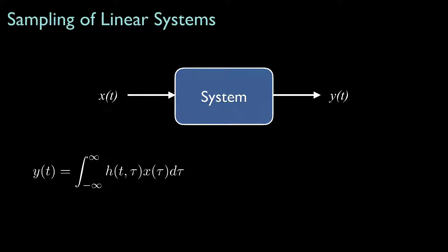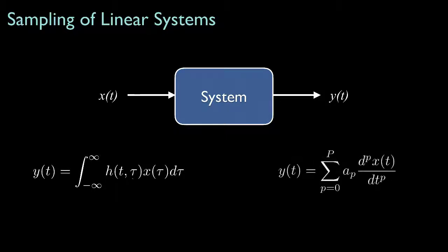One of the ways we describe the input-output relationship for a linear system is through a superposition integral with some kernel h of t and tau, which is the response of the system at some time t when the input is an impulse at some time tau. Another way is through a p-th order differential equation with some constant coefficients a sub p. This system is characterized by its order, capital P, and by the coefficients a sub p.